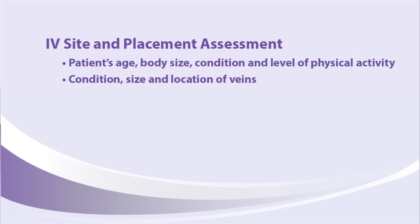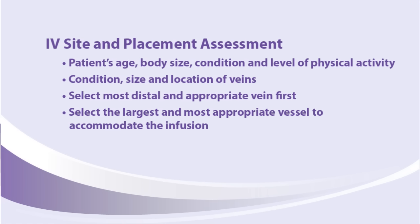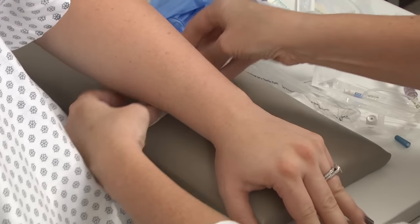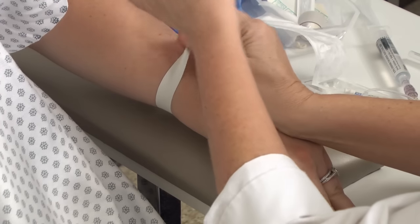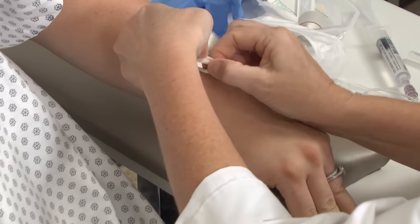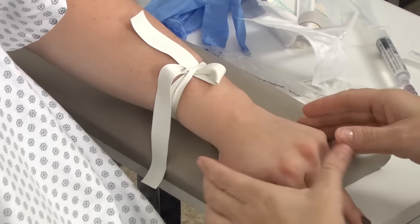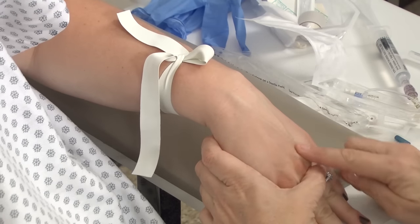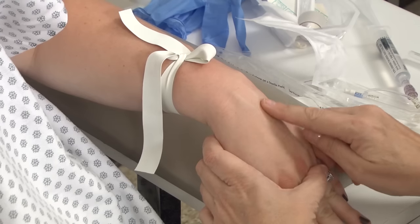The nurse needs to consider the patient's age, body size, condition, and level of physical activity, as well as the condition, size, and location of veins when choosing a vein for the IV. Ideally, select the most distal, largest, and appropriate vein first to accommodate the infusion — this is especially important if the patient will be receiving IV therapy long term. Apply the tourniquet approximately four to six inches above the desired site. The tourniquet needs to be tied in a single hand release loop, similar to how you tie a patient's restraint. Avoid joints and wounds when applying the tourniquet. The tourniquet will cause the veins to dilate and make them palpable — they should feel squishy, like a fishing worm.